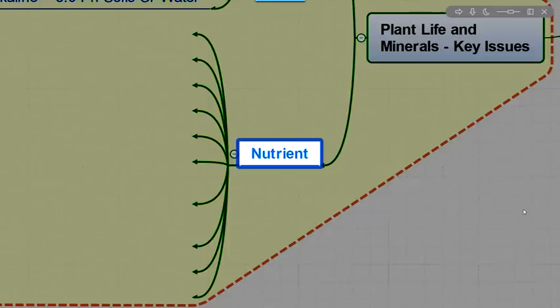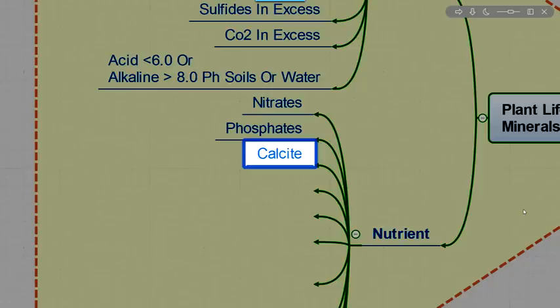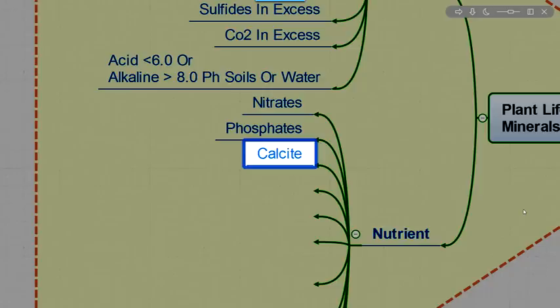Nutrients. Nitrates are necessary for all plant growth. Phosphates are necessary for all plant growth. Calcite, to some degree, or calcium, is necessary for plant growth. Iron.